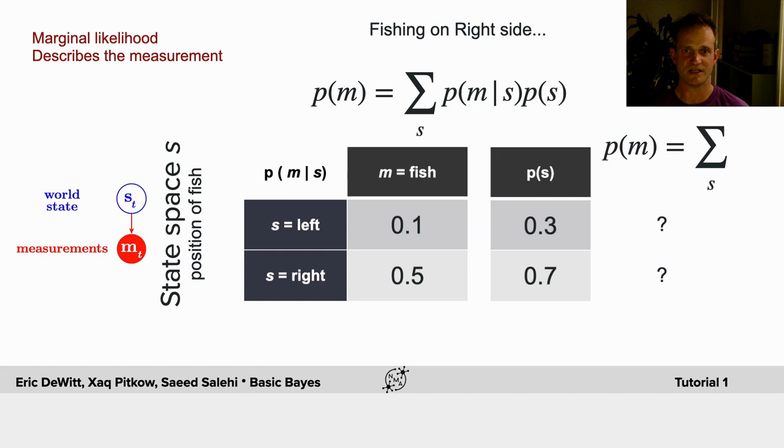We're going to do the same thing we just did. We're going to look at the probability of the fish given the state being left, the probability of seeing a fish given the state being right, times the probabilities of those states, and this will give me the probability of seeing a fish.